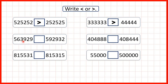Now we have 563,929 and 592,932. We start by comparing the larger place values — the hundred thousands — but both numbers have five in the hundred thousands. So we go on to the next place value column and compare our digits in the ten thousands. In this first number we have six in the ten thousands but in this second number we have nine, so we don't need to look at any more digits. We know that the second number must be larger because it has more ten thousands.